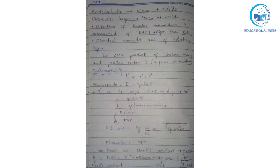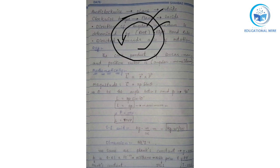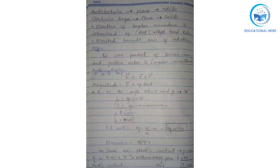In a circular path we have two directions: anti-clockwise and clockwise. Moving anti-clockwise, the plane will be outside — so in anti-clockwise circular motion the plane moves outward. But when it moves clockwise, like a clock moving, the plane moves inside. So the clockwise torque is directed inside.